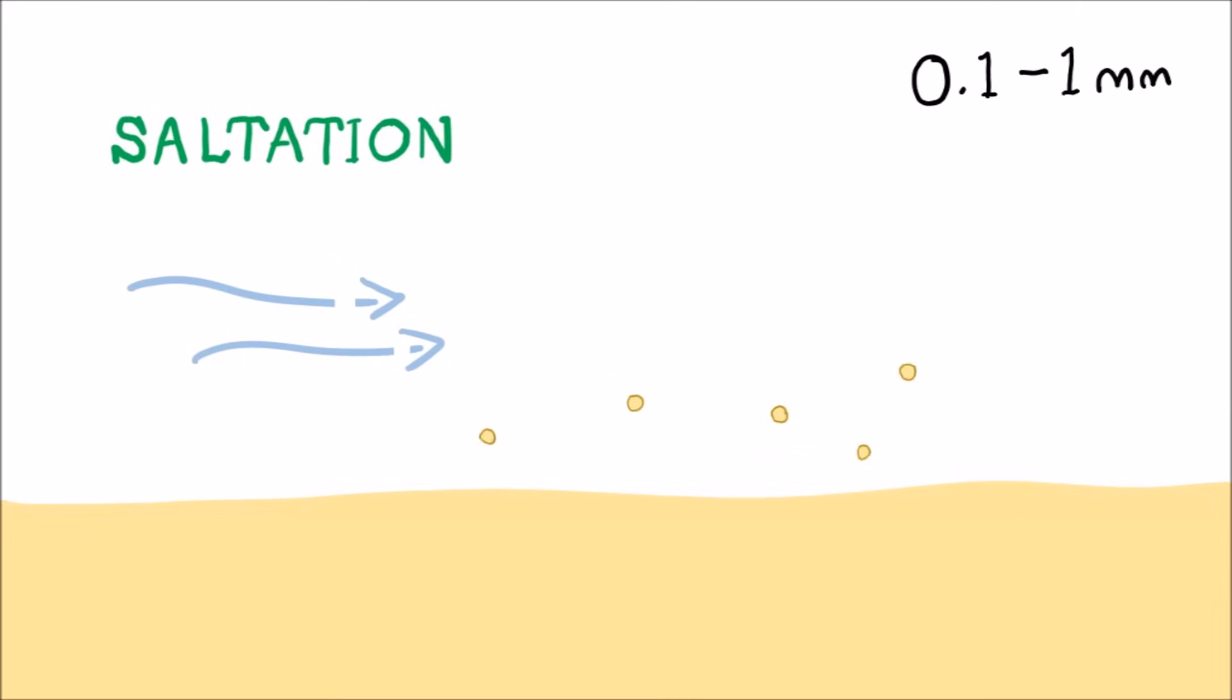Saltation is when particles between 0.1 and 1 millimeter in size bounce along the ground up to 1.5 meters high. Saltating material can also be used for abrasion and this explains why rocks get eroded at a faster rate closer to the ground.